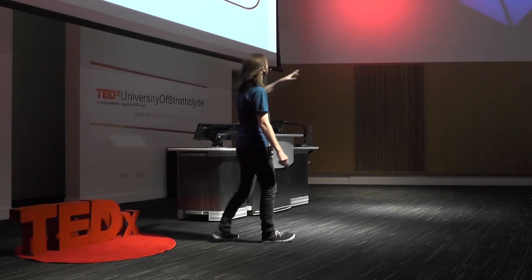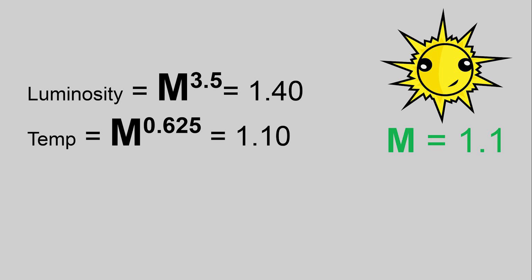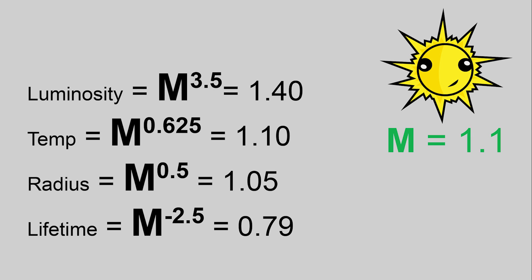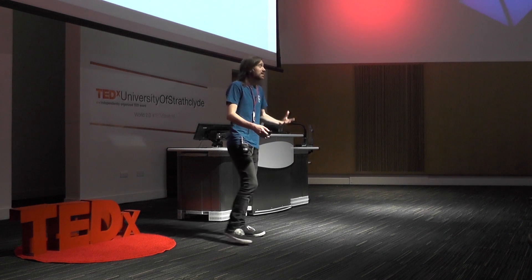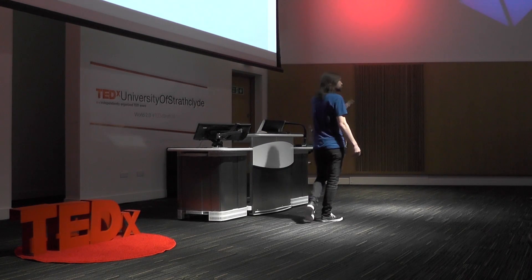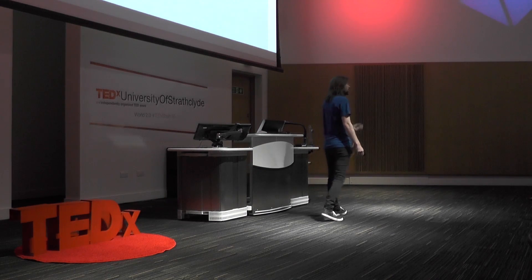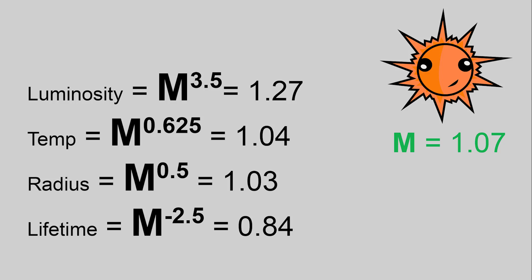Check this out. Let's say I have a star that's 1.1 times the mass of our sun. If I do this, I generate its luminosity, how bright it is relative to our sun. This, its temperature, this, its radius, and this, its lifetime, all relative to our sun. How awesome is that? Like, using just the most basic of exponents, I'm able to literally determine the physical makeup of a celestial object. And this holds every time.